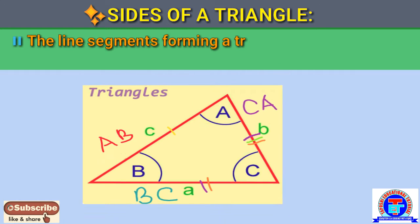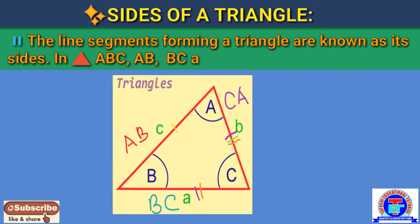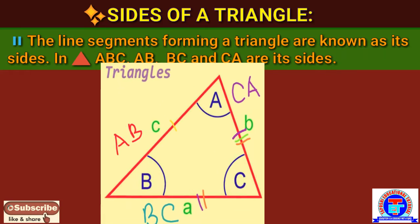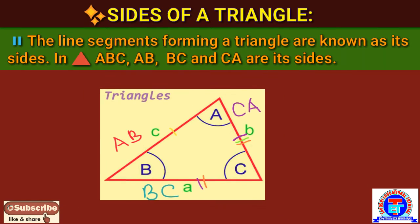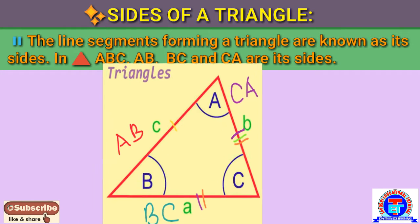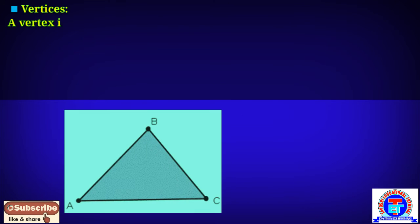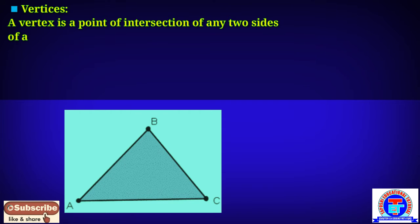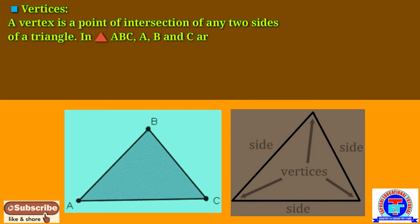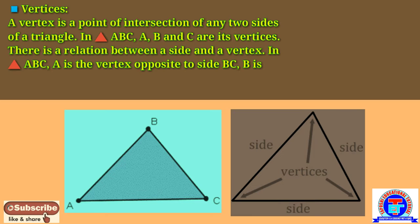Now here we find out the sides of this triangle. The line segments forming a triangle are known as its sides. In triangle ABC, AB, BC, and CA are its sides. The vertices are the points of intersection of any two sides of the triangle. In triangle ABC, A, B, and C are its vertices.